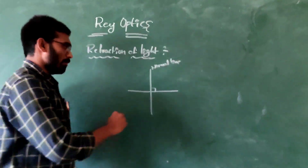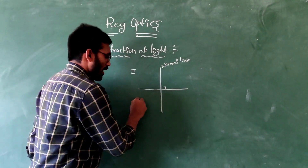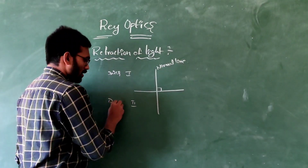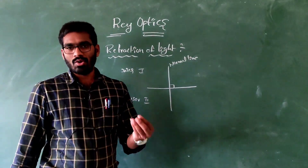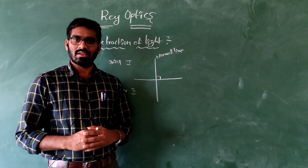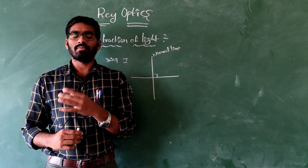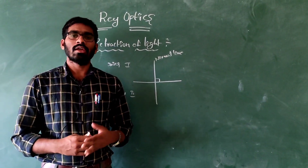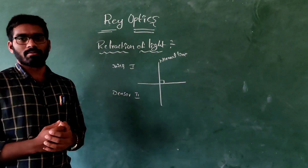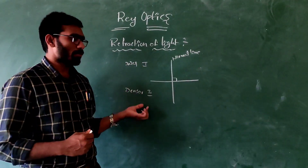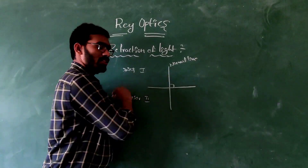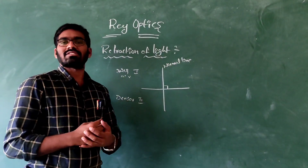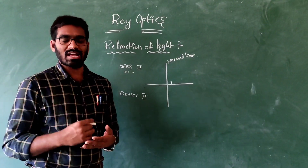Here, this is the transparent material. This is medium one and this is medium two. Medium one is called the rarer medium and medium two is called the denser medium. What is the rarer medium? The speed of light is greater in that medium — that is called the rarer medium. The speed of light is less in that medium — that is called the denser medium. The example of a rarer medium is air, and the example of a denser medium is liquid or any transparent material.